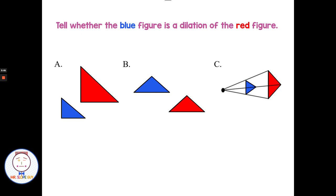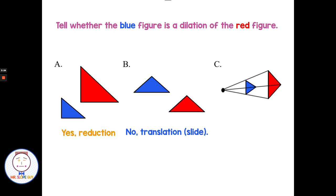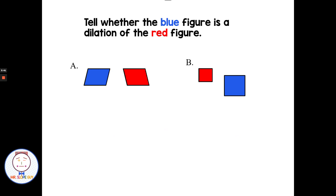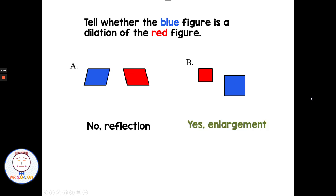From the red figure to the blue figure on A, we have a dilation — it's showing a reduction. From red to blue on B, these look like the same size, so it looks like we've just had a translation or a slide — not an enlargement or a reduction. On C, from red to blue, with the center of dilation lines visible, it is showing a reduction again. From red to blue on the next figure, same size but different orientation — looks like it has been reflected. And from red to blue on the last one, we have two rectangles going from small to big — that is an enlargement.